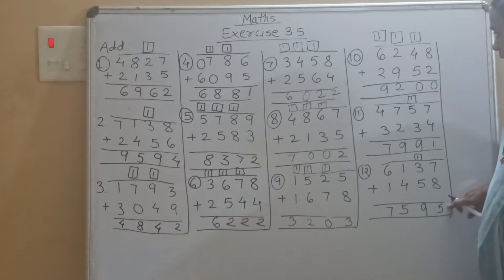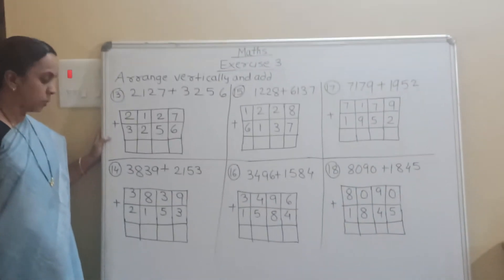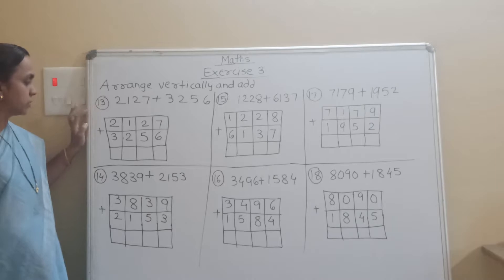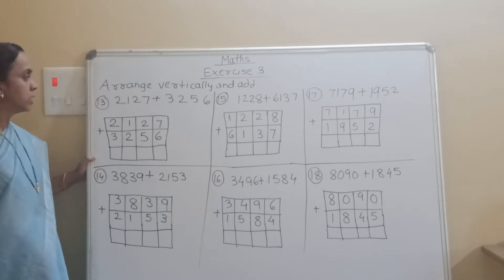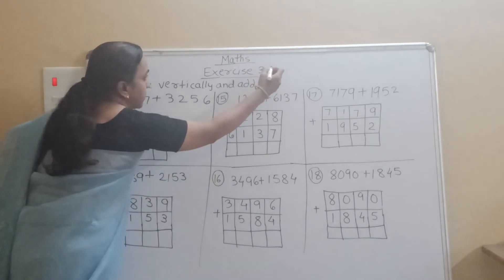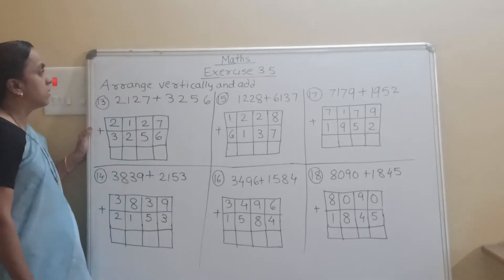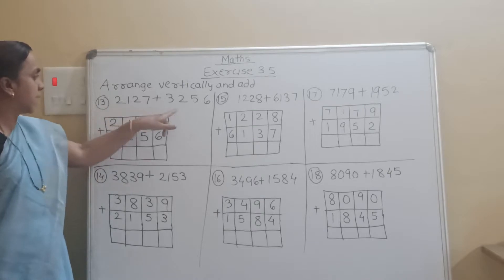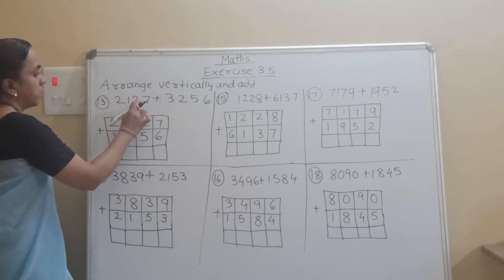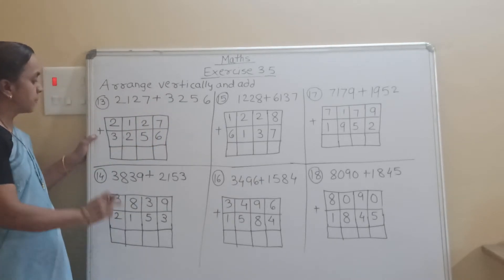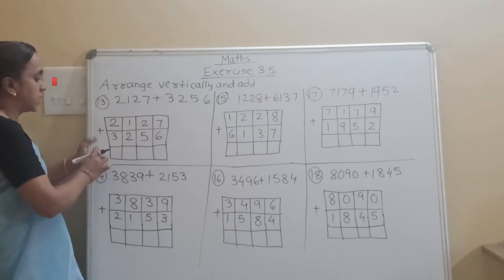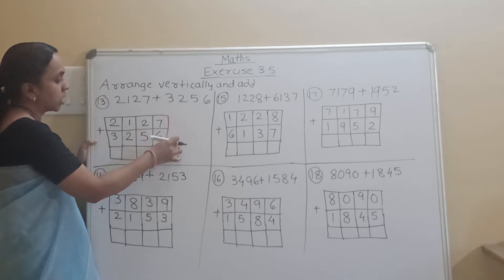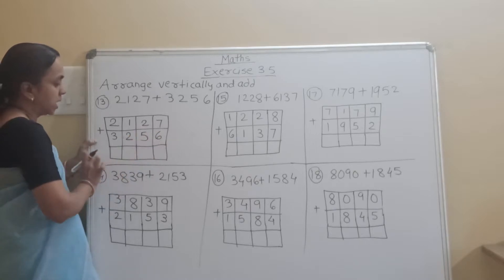Write down all these answers in your textbook. Now see page number 46: arrange vertically and add. This question you have to write down in your notebook. Write down exercise number 3.5, and write each digit in each separate box.